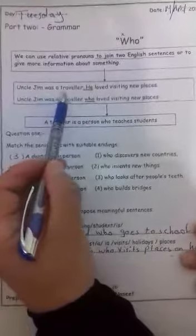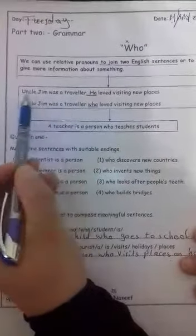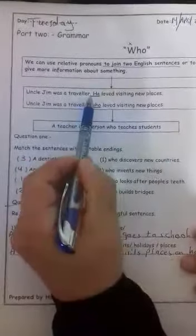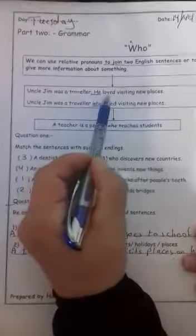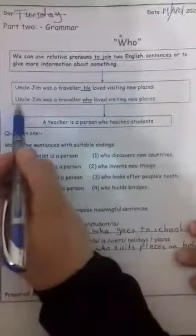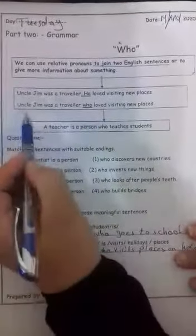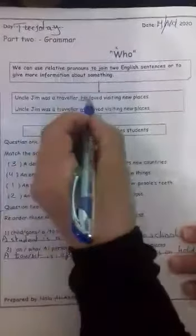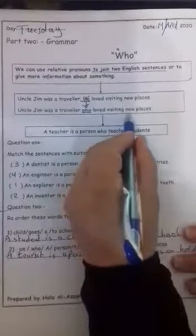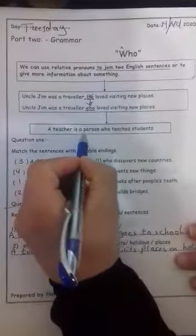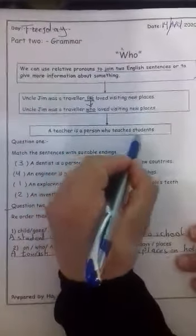Example: 'Uncle Jim was a traveler.' This is sentence number one. We put a full stop because we finished the sentence. 'He loved visiting new places.' This is the second sentence. Now, to join the two sentences: 'Uncle Jim was a traveler' — we omit 'he' and put 'who' — 'who loved visiting new places.' And we put a full stop. A teacher is a person who teaches students.